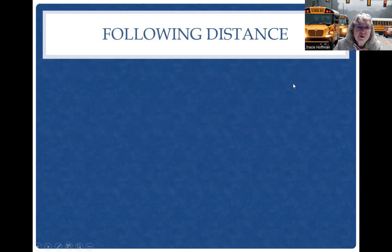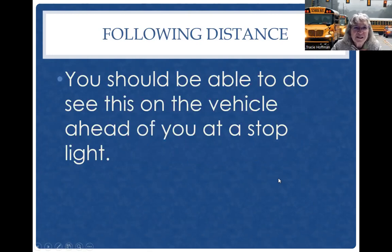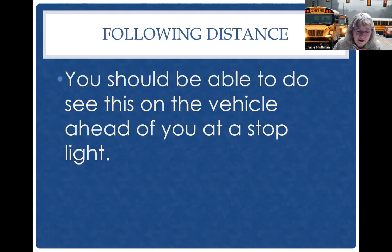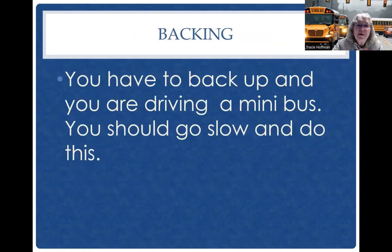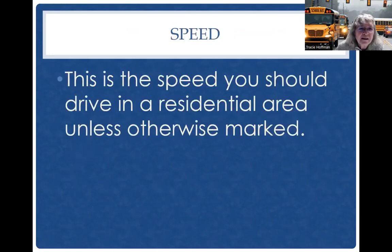Following distance question: You should be able to see this on the vehicle ahead of you at a stoplight. Backing question: You have to back up and you're driving a minibus with an attendant — you should go slow and do this. Speed question: This is the speed you should drive in a residential area unless otherwise marked — is it 25, 30, or 35?